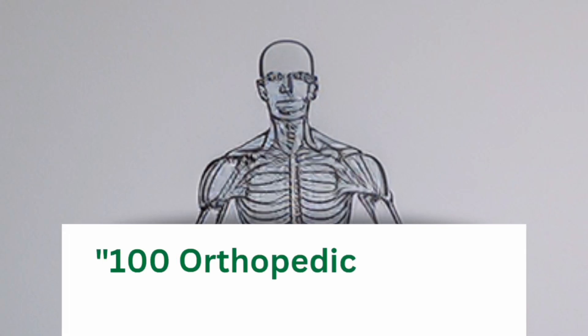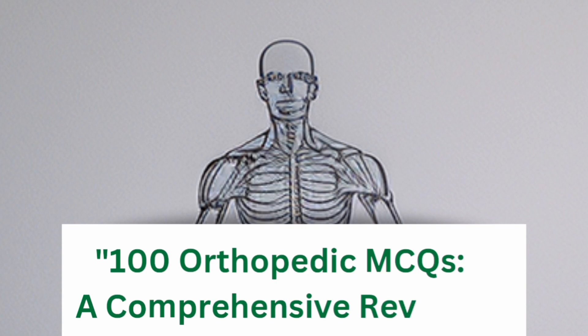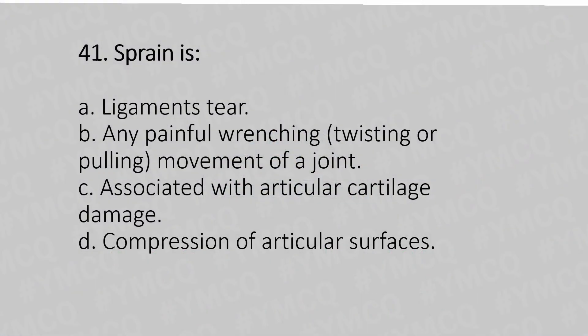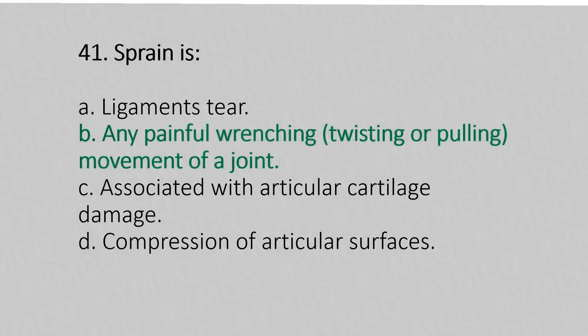Hello, welcome to Part 3 of 100 orthopedic MCQs. Now let's move to question number 41. Sprain is: option A, ligament; option B, any painful twisting or pulling movement of the joint; option C, associated with articular cartilage damage; option D, compression of the articular surface.